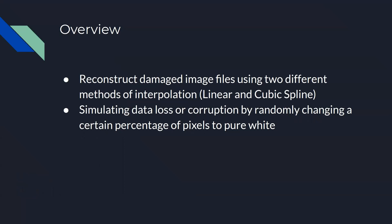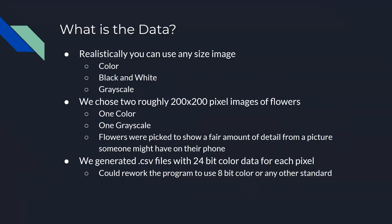We'll be simulating data loss or corruption by randomly changing a certain percentage of pixels to pure white. Realistically we can use any size image, but our implementation using MATLAB and writing to a CSV file can take a very long time to complete if the image is over 250 by 250 pixels. The image can be any format — color, black and white, or even grayscale. For this example we've chosen two 200 by 200 pixel images of flowers, one in color and one in grayscale, to show the differences in detail composition on a real world example of a photo that somebody may have on their phone.